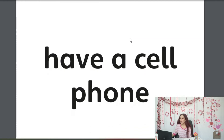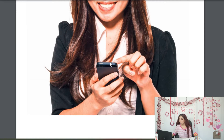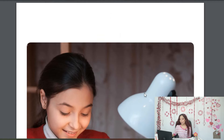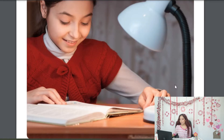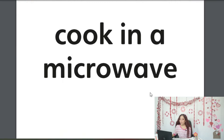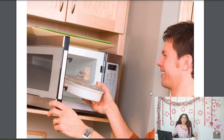We also have 'have a cell phone' — have a cell phone. The cell phone is this one, it's an old iPhone. And also 'have electric lights' — have electric lights. We also have 'cooking in a microwave' — cooking in a microwave. Do you use microwaves? I have one but I never use it.